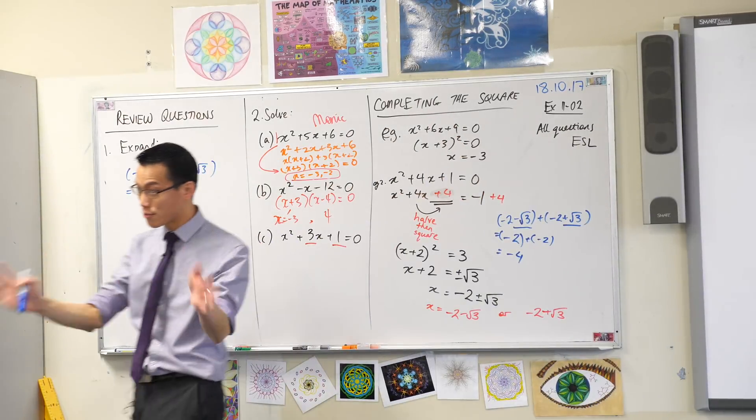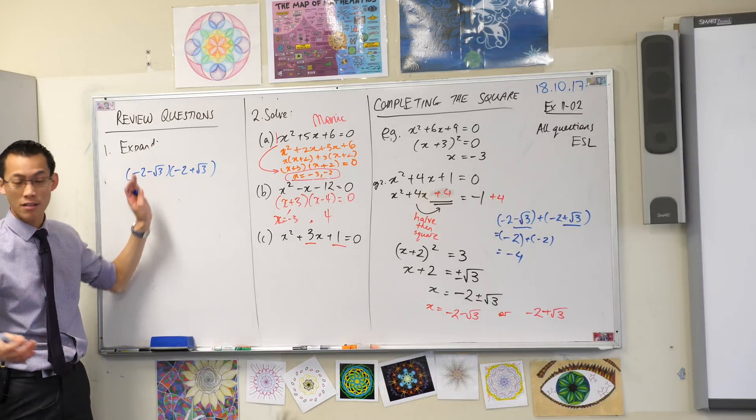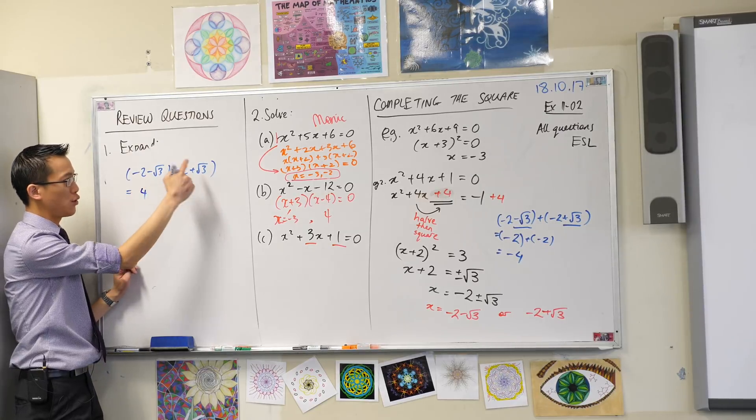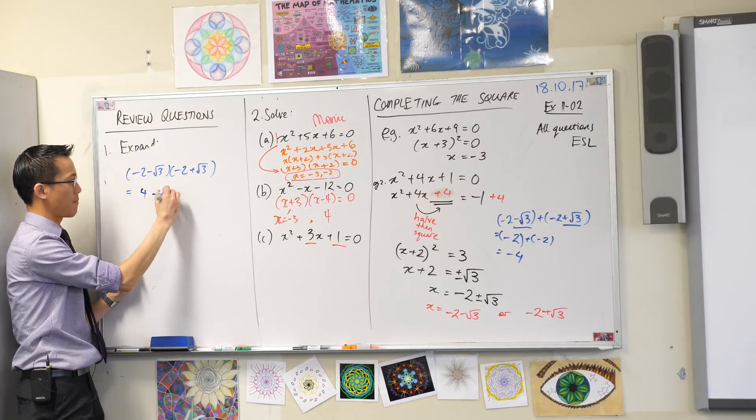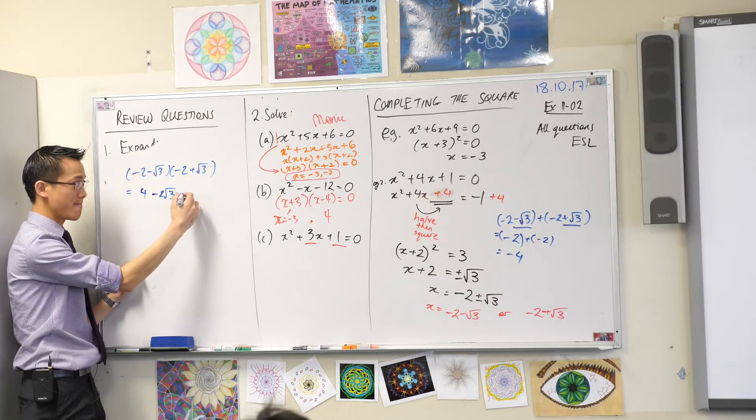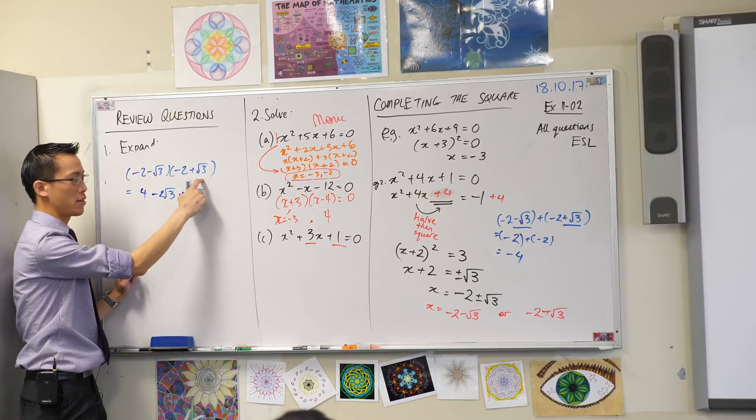However, with this, watch. It's really quite lovely, actually. Watch what happens when we expand. We know how to expand. -2 times -2? -2 times √3? -√3 times -2? -√3, positive √3, positive √3.